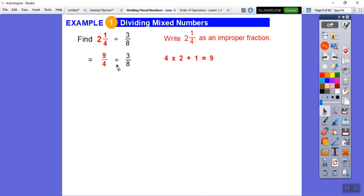Now we do our keep flip change. We'll keep this fraction, flip this one and change that to a multiplication. Then we just start cross dividing. I'm going to divide by 3 with these guys. 3 goes into 3 once, 3 goes into 9 three times.